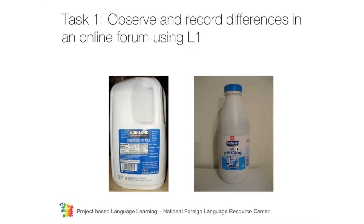Here is a made-up example of how a Kultura exchange might work. The first step in a Kultura exchange is always observing and recording differences in an online forum. The MIT students and students from France are presented with two culturally significant objects — one from the U.S. and one from France — and they're invited to observe differences and record them in the forum using their own language. The American students post in English and the French students post in French, providing one another with authentic, native linguistic resources. This use of the native language in the forum is one of the most distinctive characteristics of Kultura.